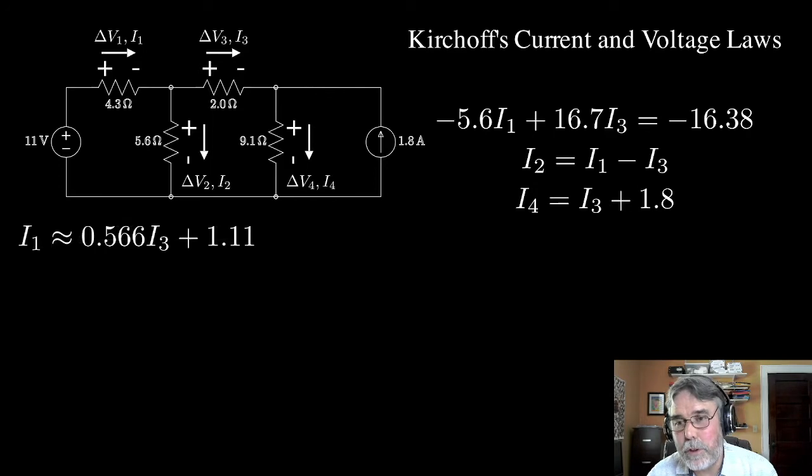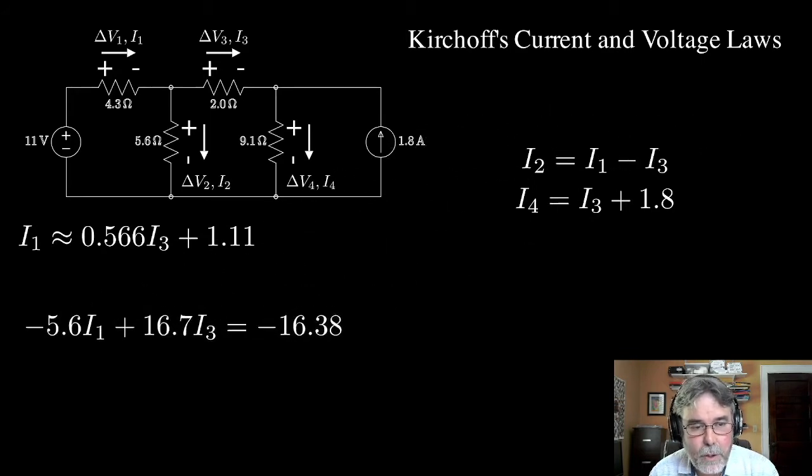And I've gotten rid of the units because it's just easier to talk about it without the units. Some folks might wish that I had kept the units in there, but for whatever reason, I decided that it was easier to get rid of the units for now. You should understand that this expression, since we divided by 5.6, which is a resistance in ohms, what used to be 16.38 volts is now 1.11 amps. So everything here is in amps.